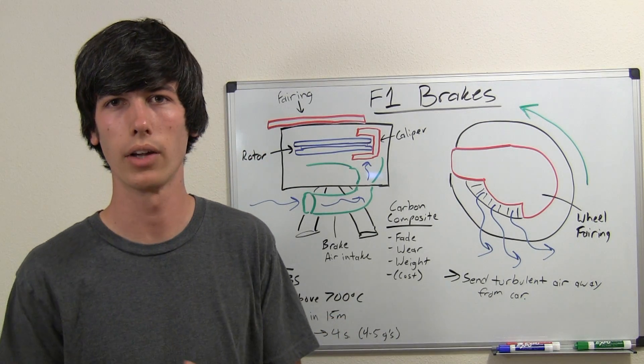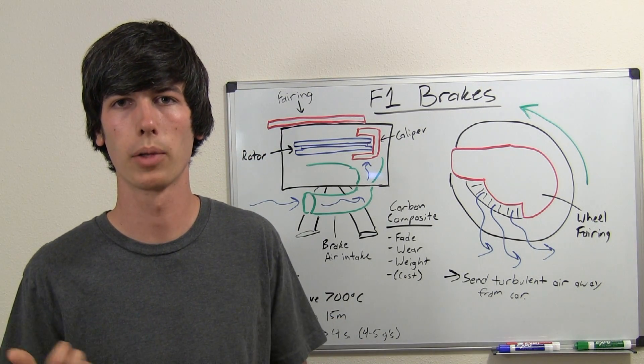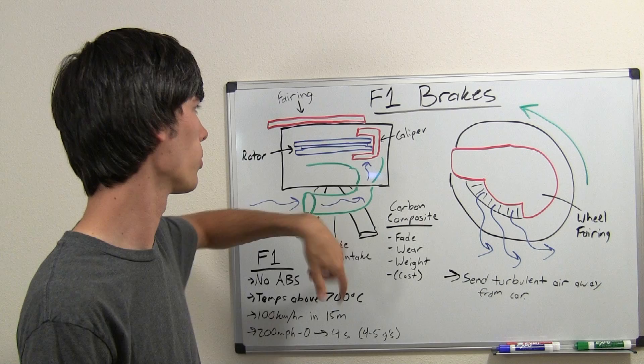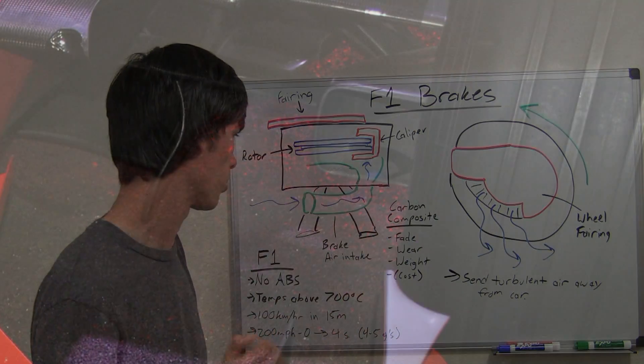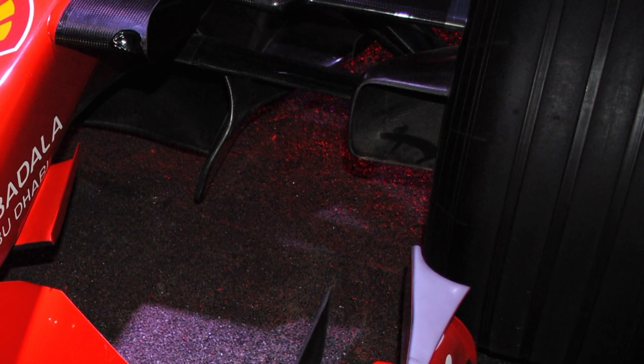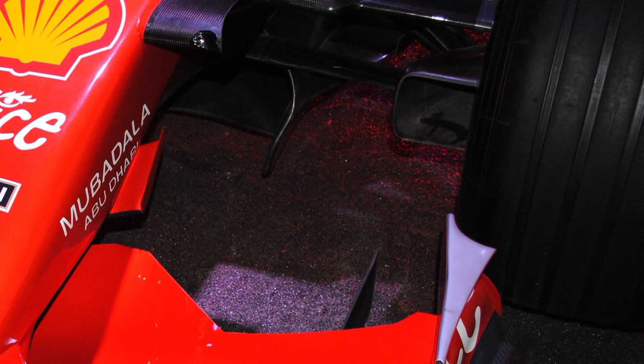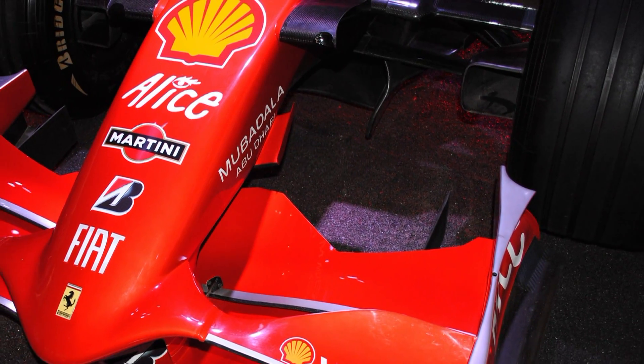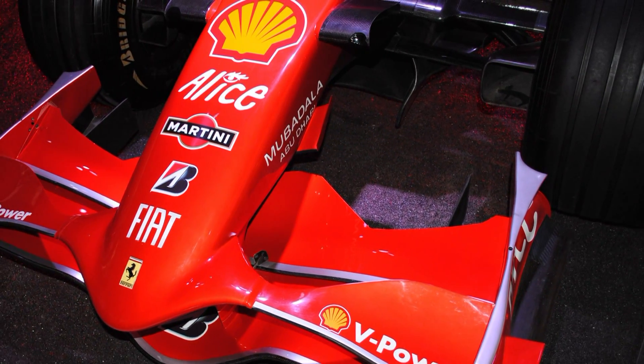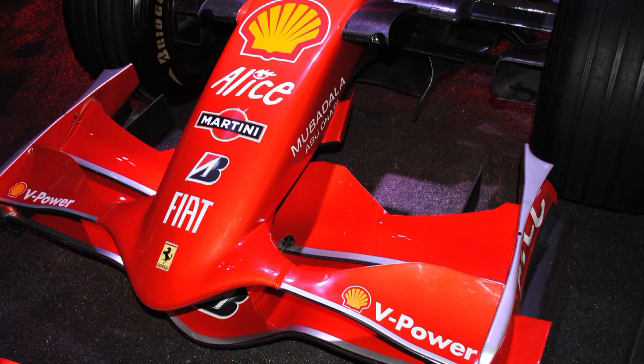And I'm also going to include an image of a Formula One car with these wheel fairings and the air intake for the brakes. So, in this picture, you can see the air intake for the brake right beside the tire. So, as the car is moving at high speeds, the air will be forced in and can circulate around the disc brakes and cool them off.